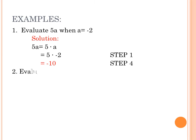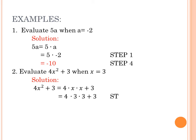Number 2: Evaluate 4x squared plus 3 when x is equal to 3. Solution: 4x squared plus 3 is equal to 4 times x times x plus 3. Substitute the value of x which is 3. We have 4 times 3 times 3 plus 3. Step 2, and 4 times 9 is equal to 36 plus 3. Step 4, and 36 plus 3 is equal to 39, the final answer.